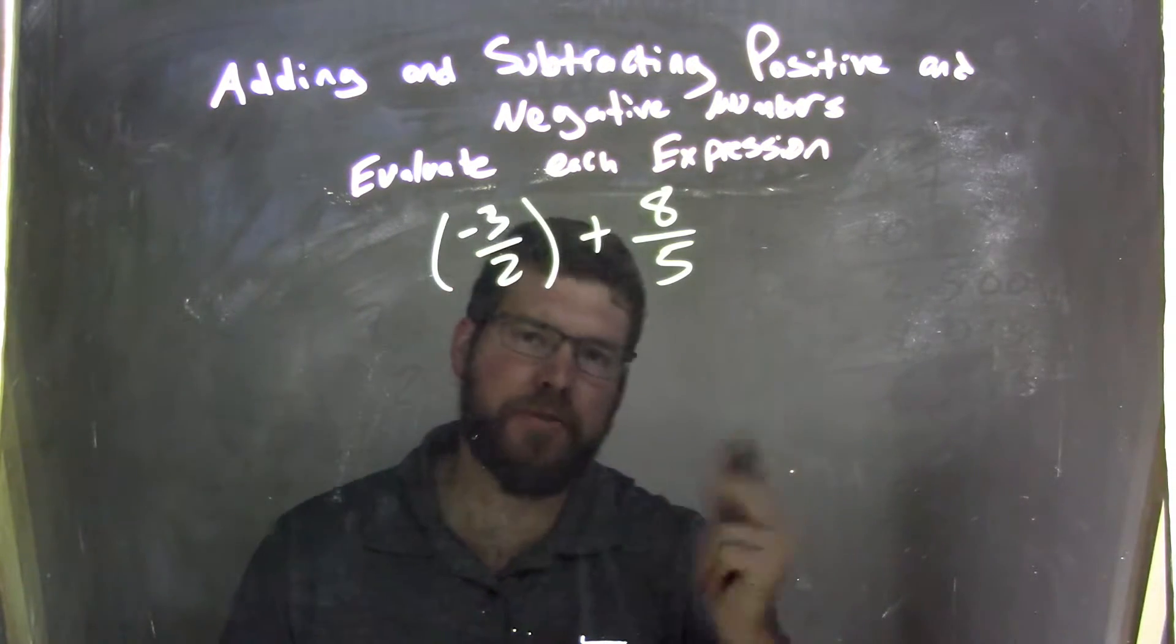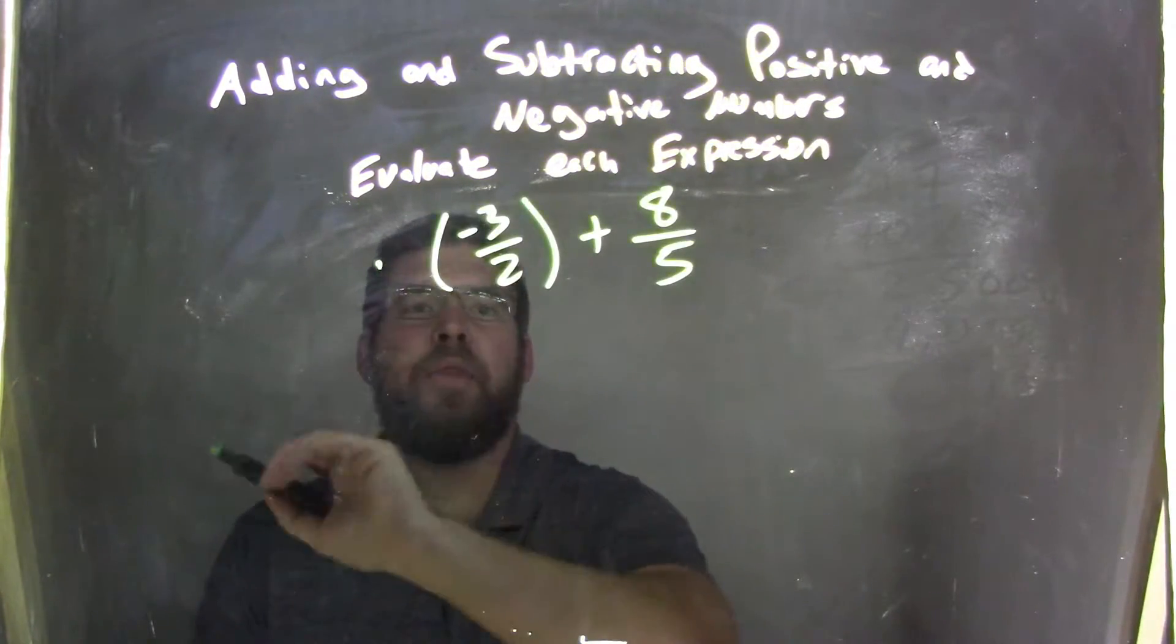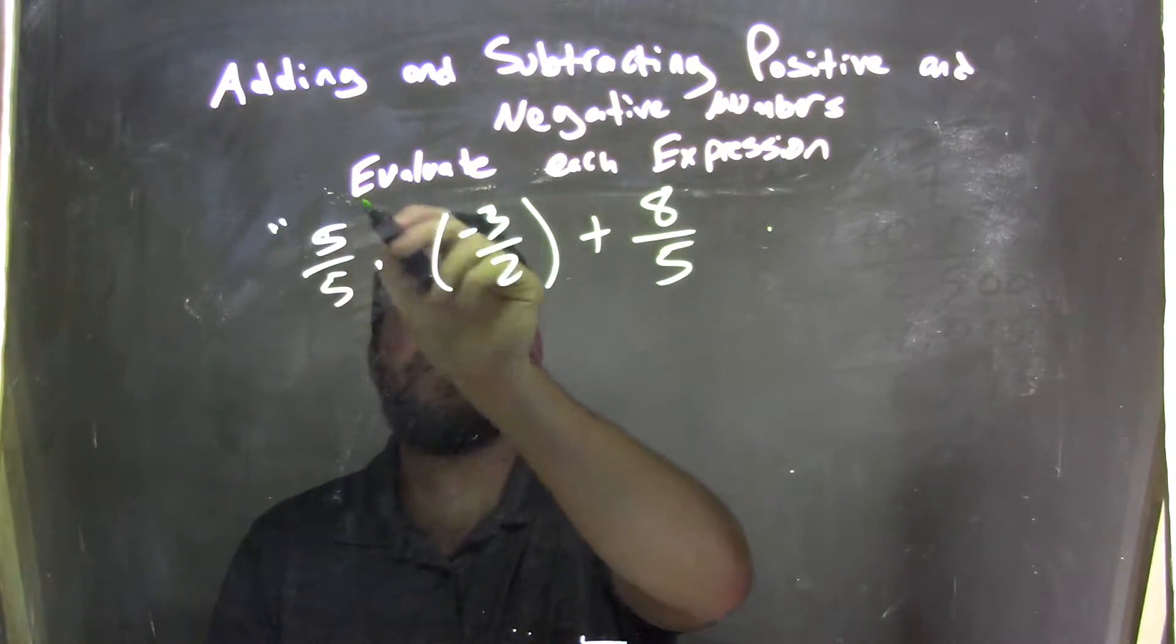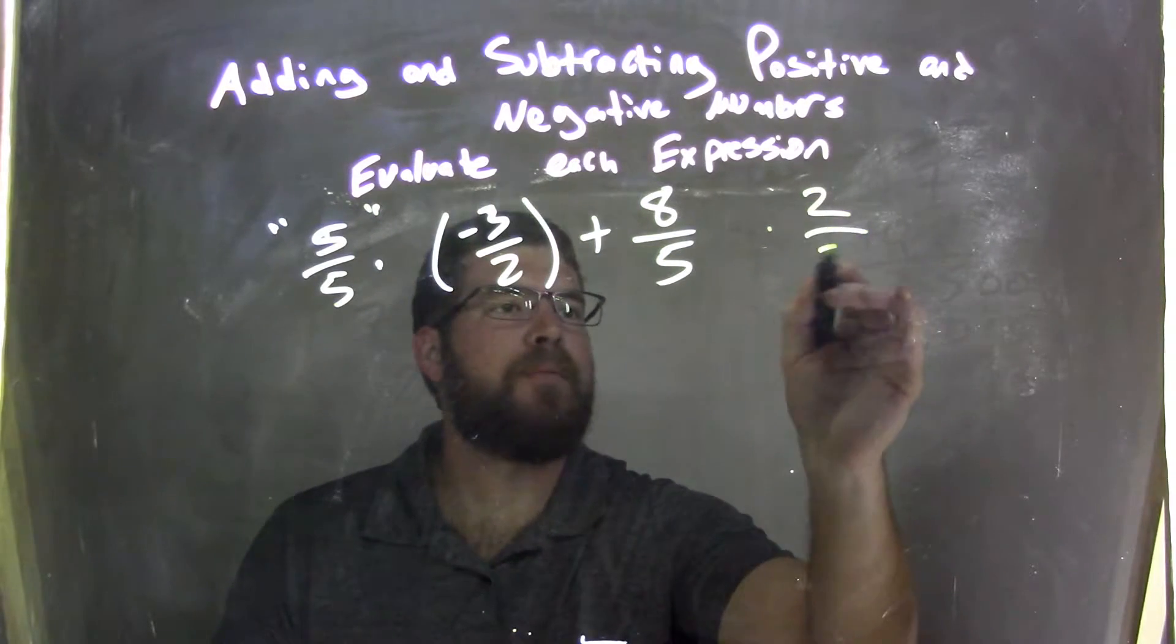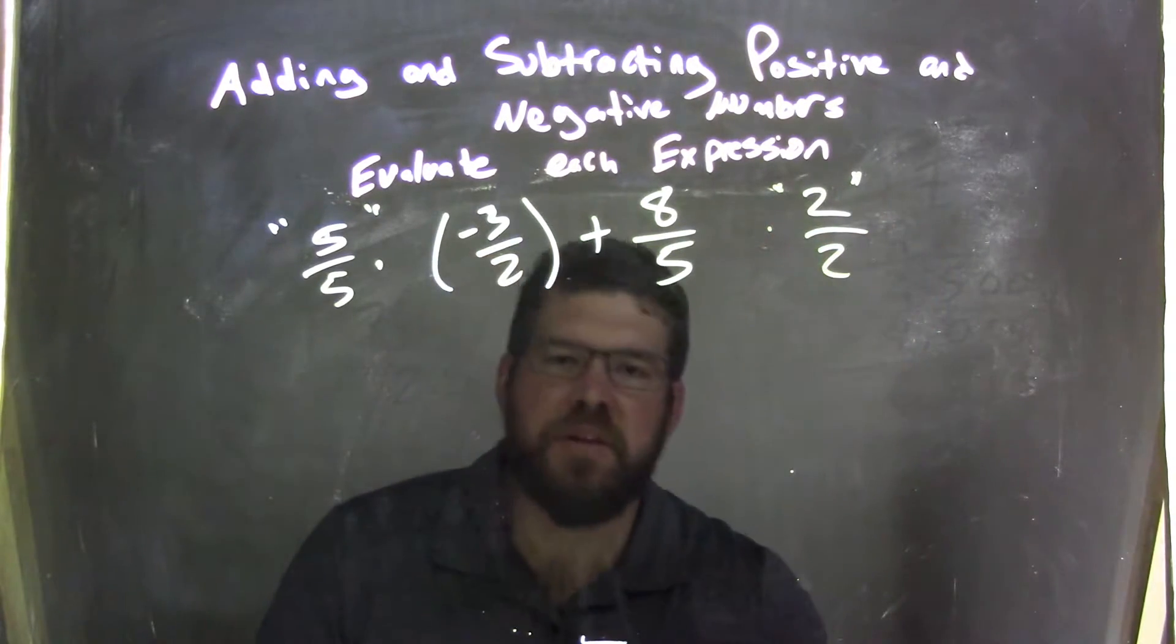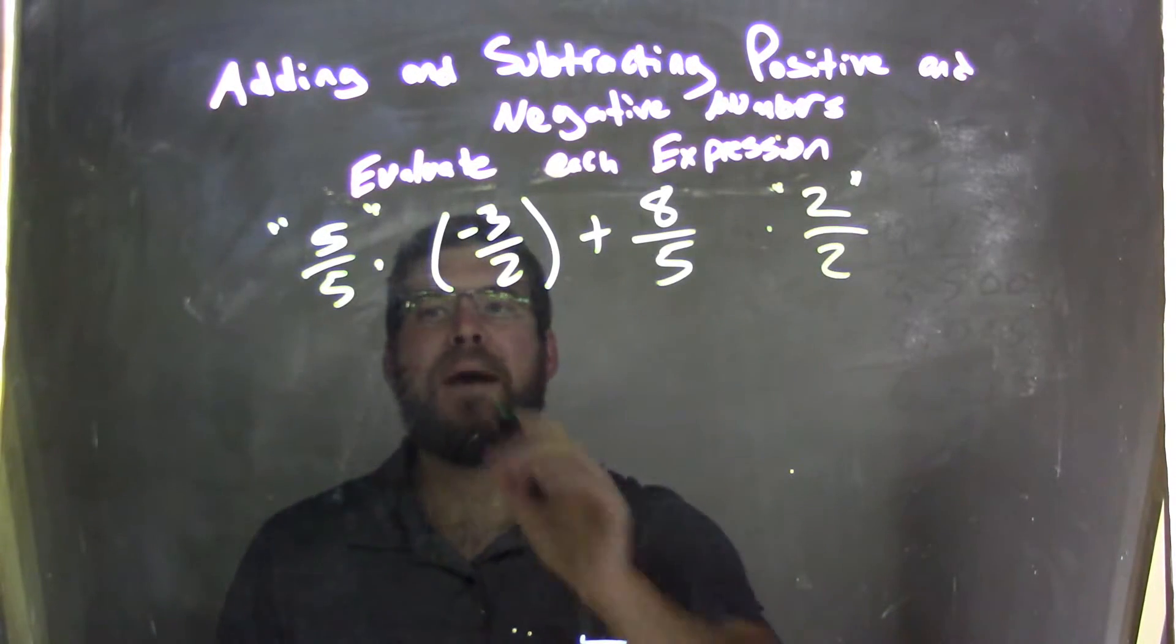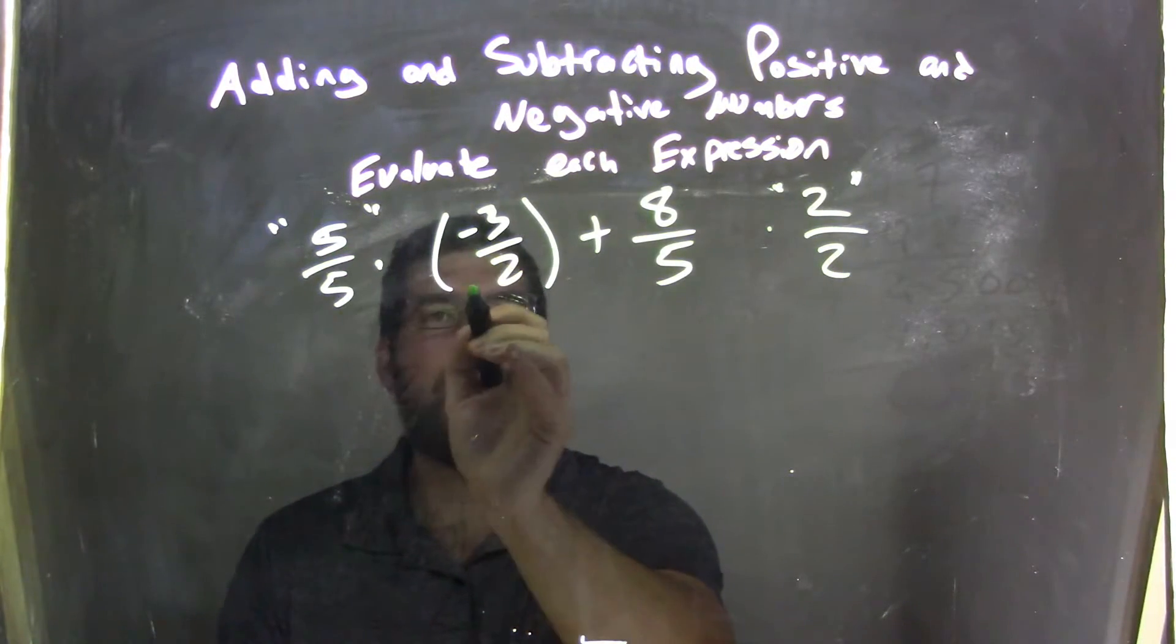Two, five times. Five, two times. So I'm going to multiply this fraction here by five over five, and this fraction here by two over two, and we know each of these fractions, five over five and two over two, is just one, doesn't change the problem, but by doing so, we multiply across the numerator and across the denominator.